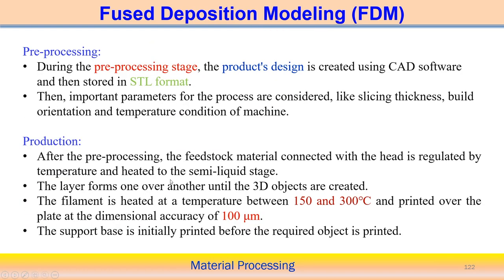During pre-processing, the shape of the component is designed using CAD software and converted to a .STL file containing all geometric feature information. Important parameters such as slicing thickness, build orientation, and machine temperature conditions are generated. Layer thickness for each deposition step is decided beforehand. All this data is stored in the .STL file and supplied to the computer, which will automatically print the component based on the pre-processing data.